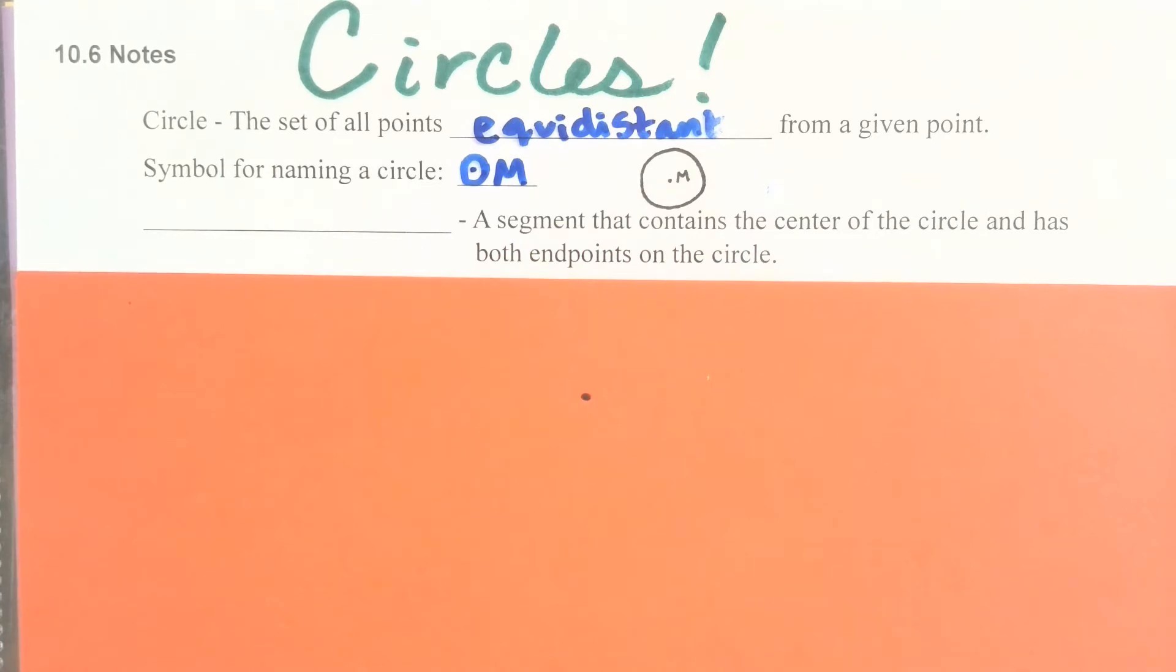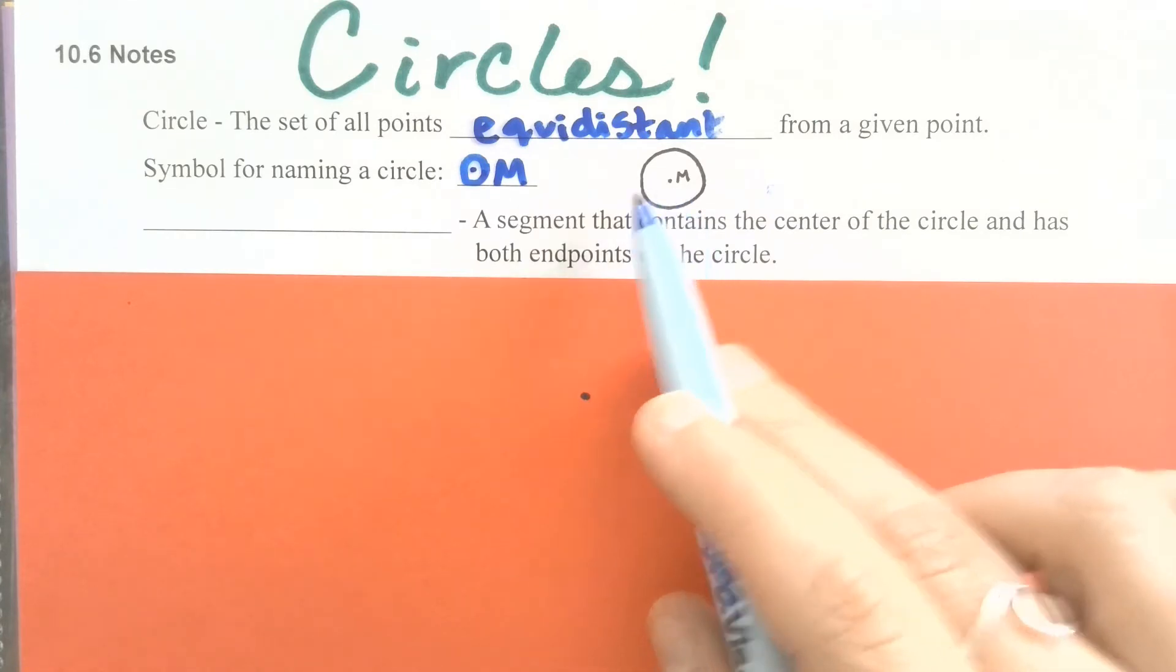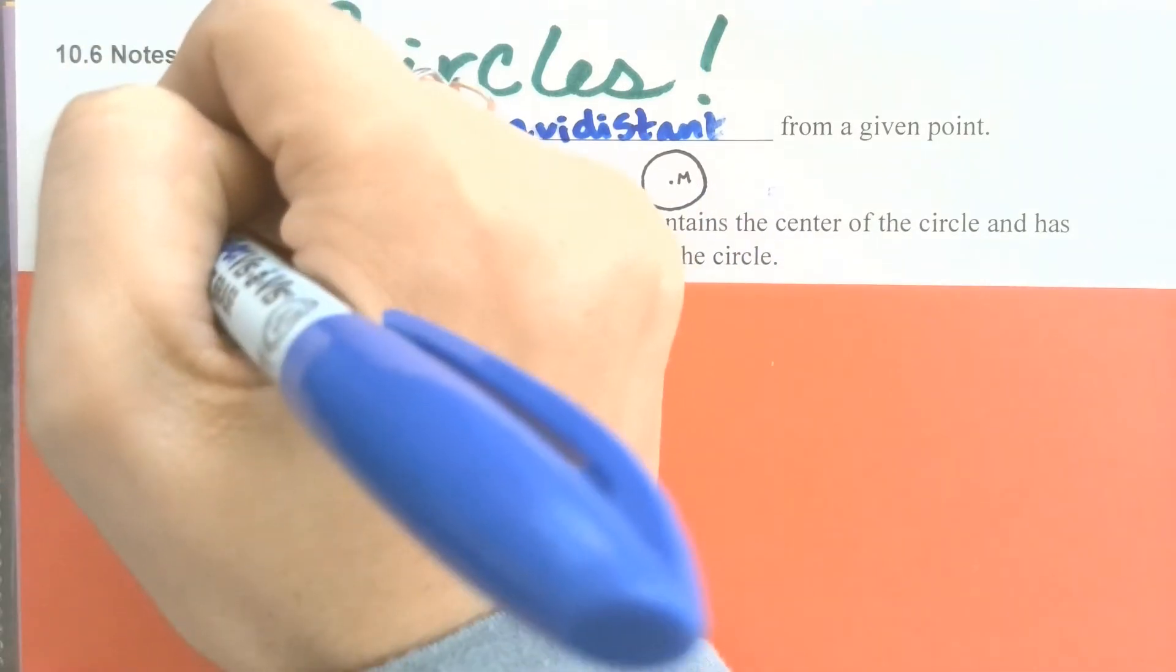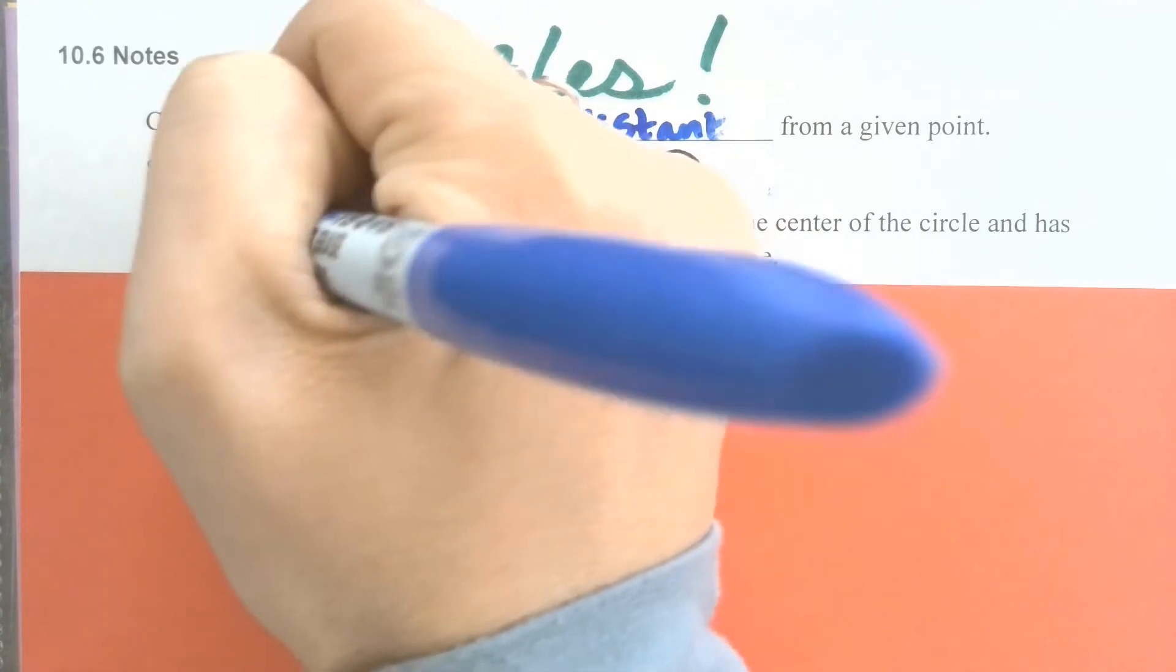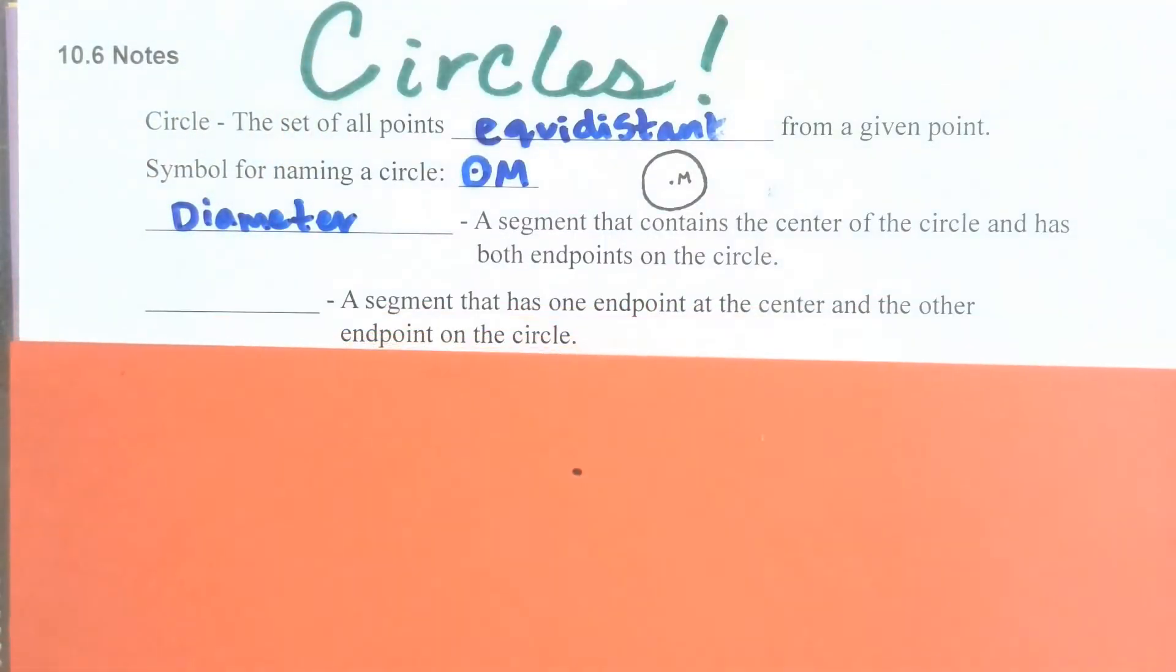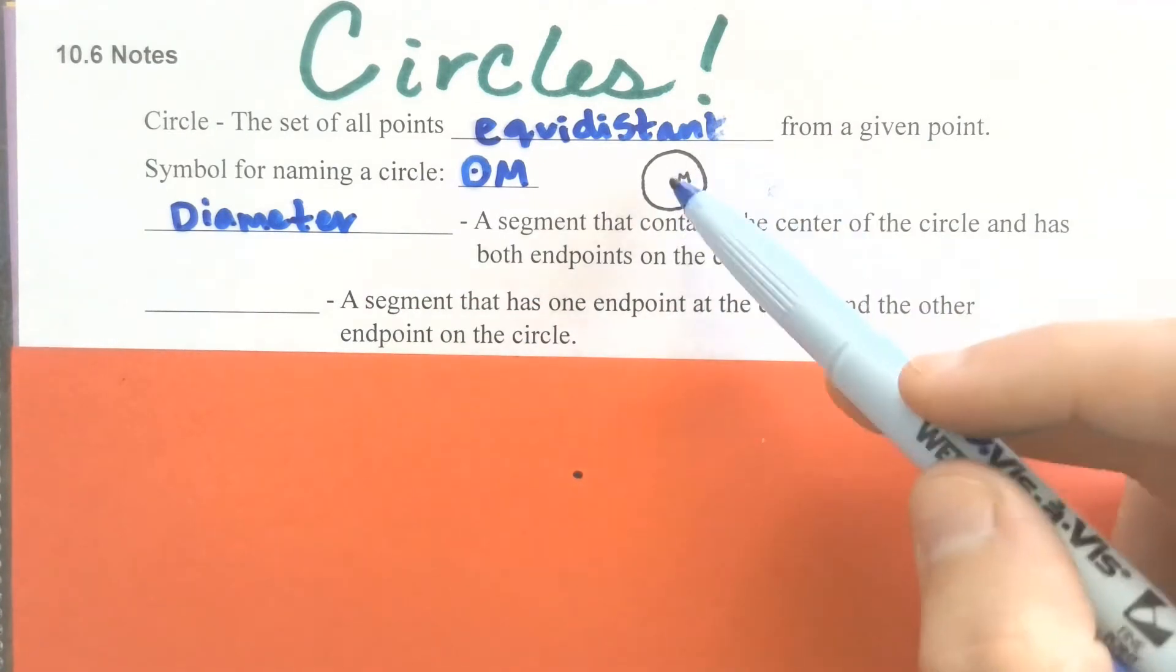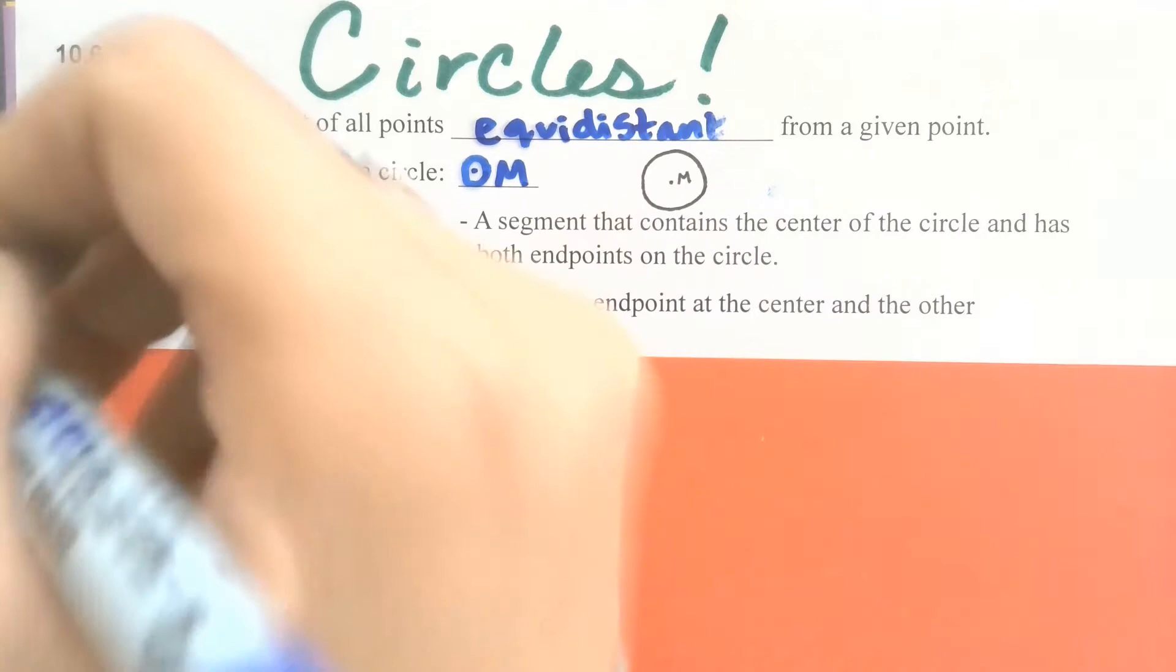Some definitions that we really already know: a segment that contains the center of the circle and then has both endpoints on the circle would be a diameter. A segment that has one endpoint on the center and then the other endpoint on the circle is a radius.